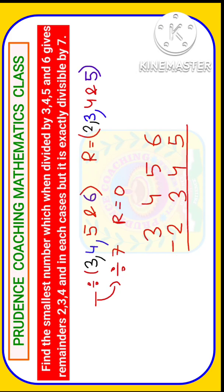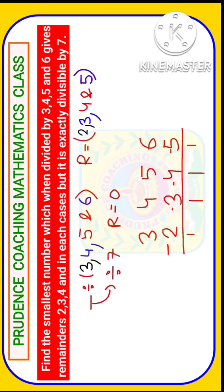Here as you can see, 3 minus 2 is 1, 4 minus 3 is 1, 5 minus 4 is 1, 6 minus 5 is 1. That means in each case the difference between the divisor and the remainder is 1. But this number is exactly divisible by 7.